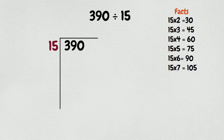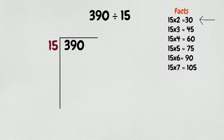None. Move to the next digit and ask yourself how many times can 15 go into 39? Well, looking at our math facts, we have 15 times 2 is 30 and 15 times 3 is 45. So 15 goes into 39 two times. Place the 2 on top.